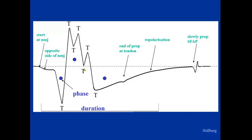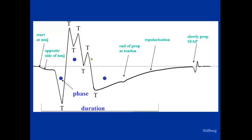We can also analyze these parameters with a computer, measuring amplitude, area, duration, and something we call thickness — which is the area divided by amplitude — and number of phases, rise time, satellites, and so on.